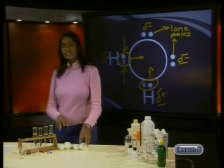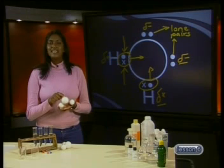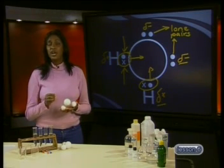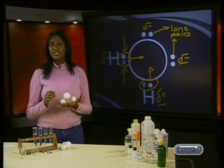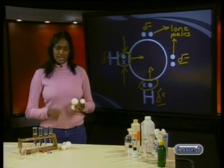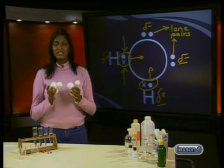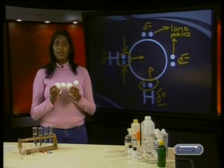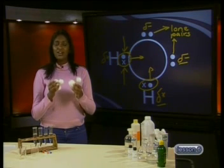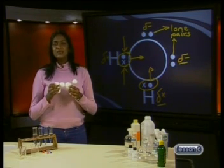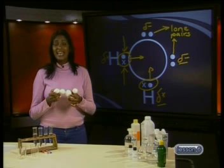I've made some polystyrene models to illustrate what I've just drawn in the Lewis diagram. The bigger ball represents the oxygen atom, which has a small negative charge on top, and the smaller balls represent the hydrogen atoms, which carry a small positive charge. Can you predict what will happen when we bring two water molecules close to each other? The positive end of one molecule is going to be attracted to the negative end of the other. These intermolecular forces give water some of its special properties, like boiling point, melting point, and density.